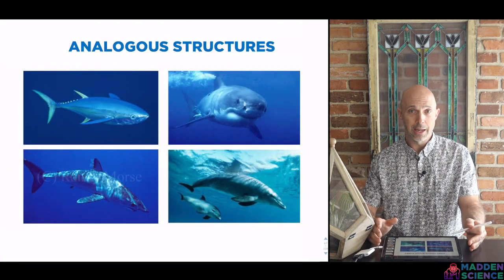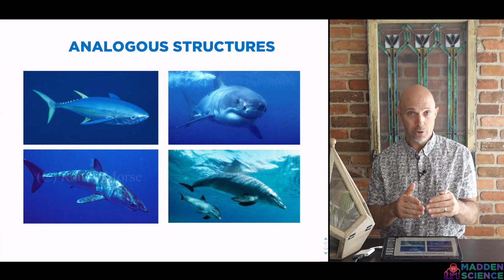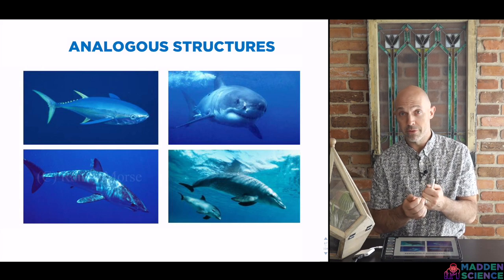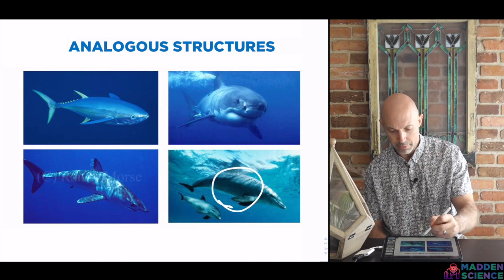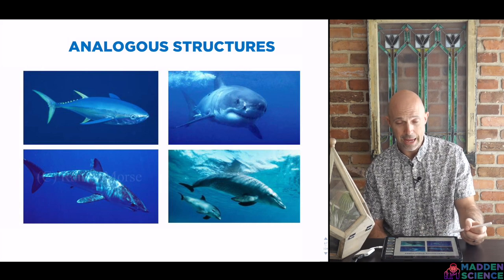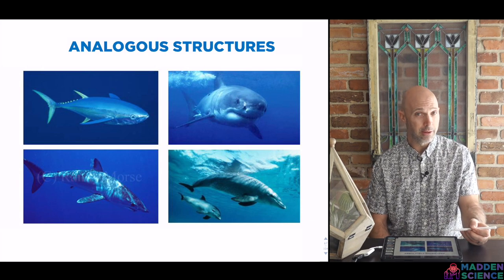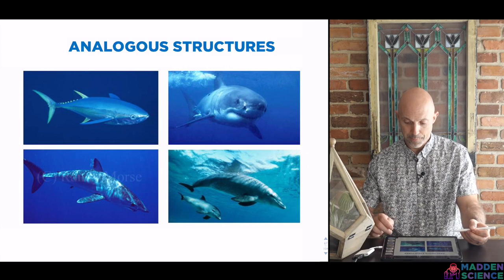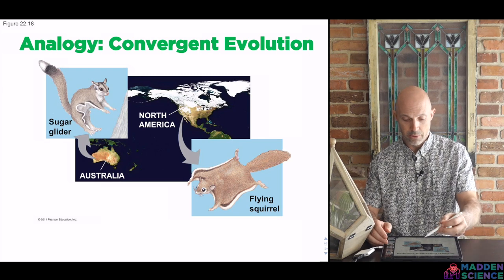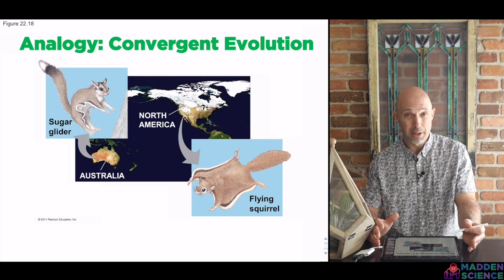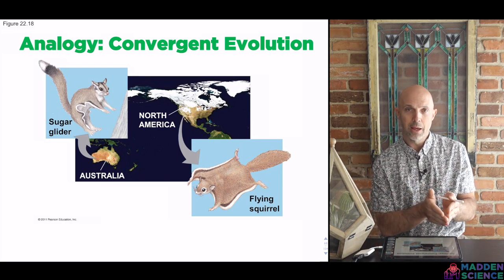Conversely, if you look at analogous structures, you have the opposite: distant ancestry, common environmental pressure. So you have different structures performing similar or the same function — the flip-flop of what you saw with homologous structures. Here you've got three fish and one mammal, or a bony fish and two cartilaginous fish or sharks, and they look pretty similar — distant ancestry and yet the same or similar fusiform shape. You can see it across the world with studies in biogeography, first made famous with Alfred Wallace: North America versus Australia — flying squirrels and sugar gliders look the same, but they're pretty distant. They just occupy very similar niches with similar environmental pressures that have shaped them in very similar ways.